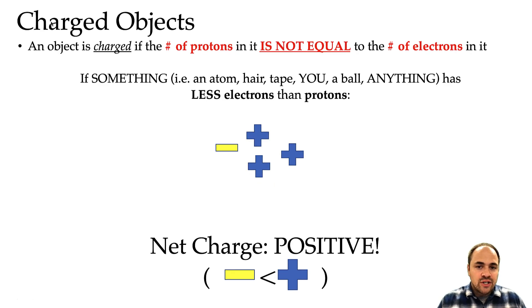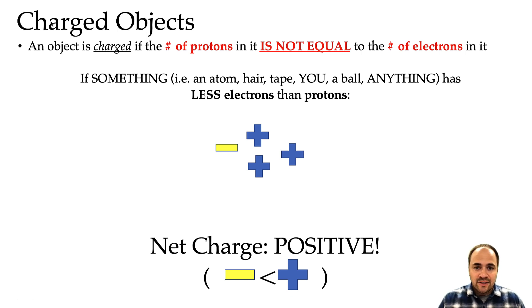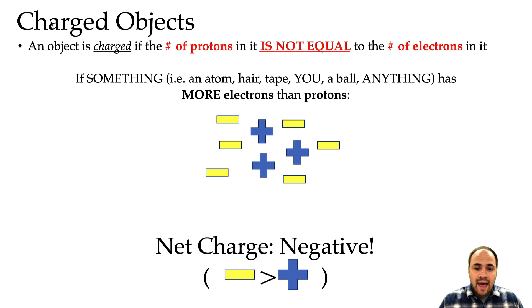Something is charged if it has an unequal amount of positive and negative charges. If you compare the number of positive and negative charges and they are different, that object has a charge. If an object has less electrons than protons, it's going to have more positive charge left over — for example, one negative charge and three positive charges: the one negative cancels with a positive, leaving two additional positives, so the net charge is positive. If something has more electrons than protons, that net charge is negative.